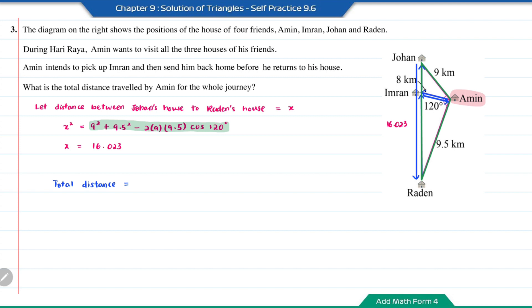So the total distance will equal to 2 times 8. This is for the part when Amin picks up Imran and then he returns to his house. Plus 2 times 16.023. So this is for the part when Amin and Imran go to Johan's house. Later on, they travel to Raden's house. Then Amin sends Imran home. So the total distance is equal to 48.046 kilometers.